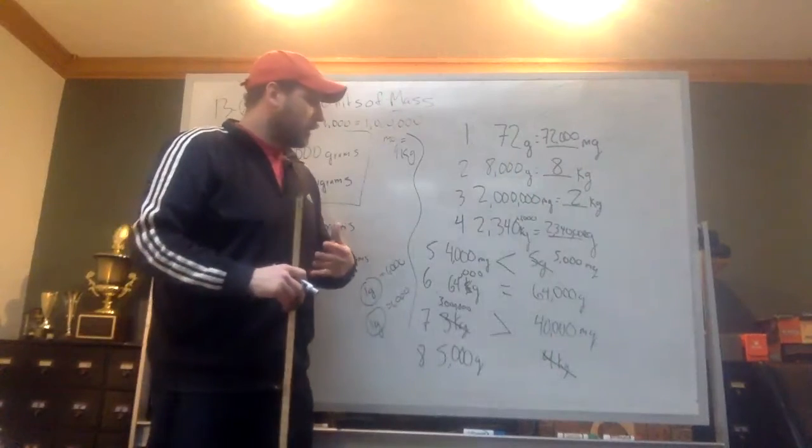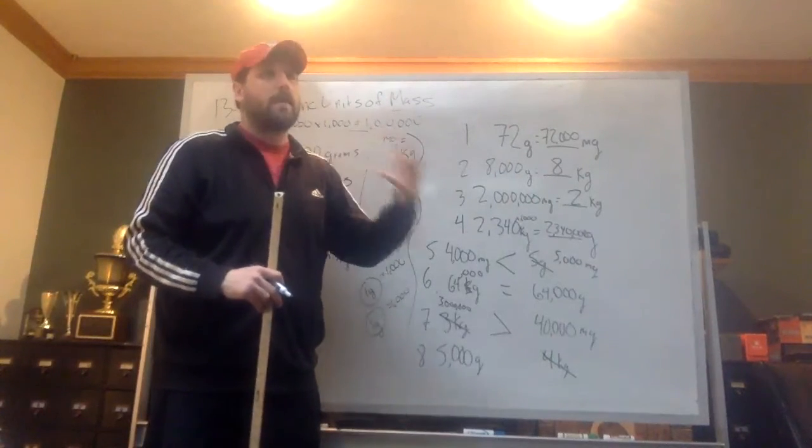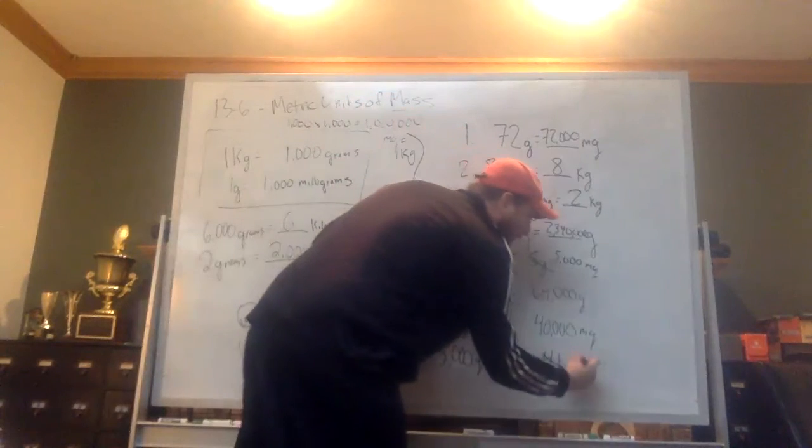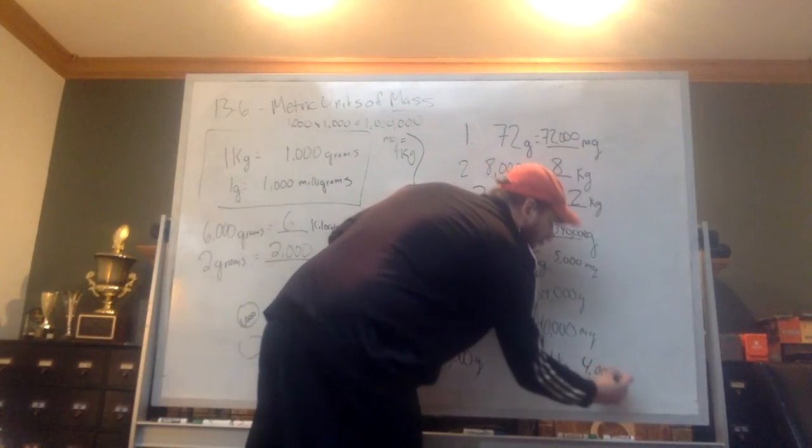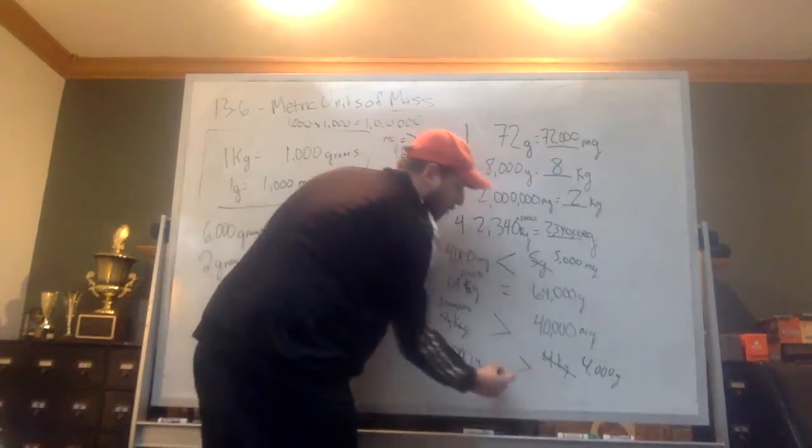So again, in order to change kilograms into grams, every kilogram is 1,000, so you times it by 1,000. 4 times 1,000 is 4,000 grams, and voila.